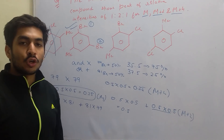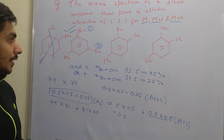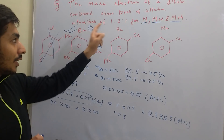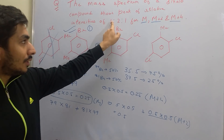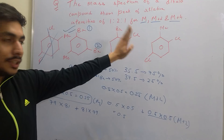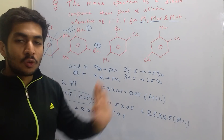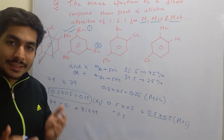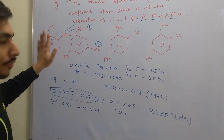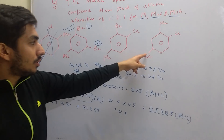Now the shortcut method: the relative intensity is 1:2:1, which means the probability of M and M+4 has to be the same. The first option was already cancelled. Looking at the fourth option with two chlorines — chlorine-35 has 75% abundance and chlorine-37 has 25% abundance.